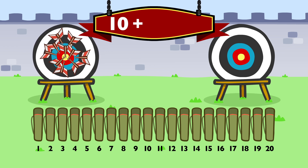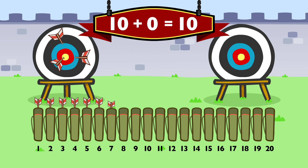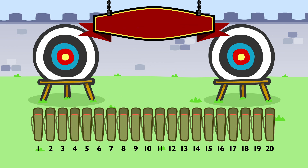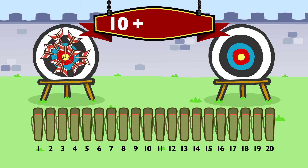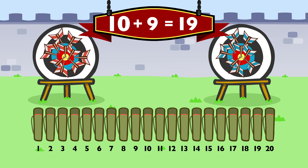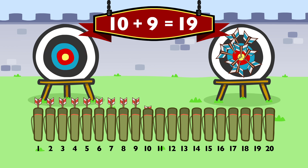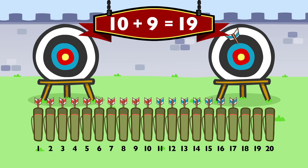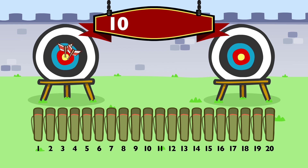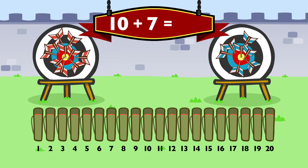10 plus 0 equals 10. 10 plus 9 equals 19. 10 plus 7 equals 17.